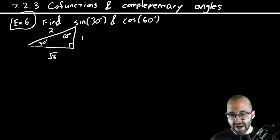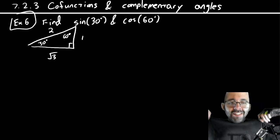Let's look at an example. I want you to find the sine of 30 degrees and the cosine of 60 degrees. To make this a little easier for you, I drew you a triangle.